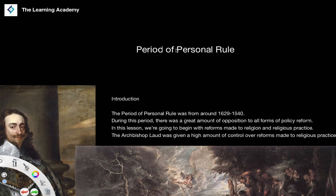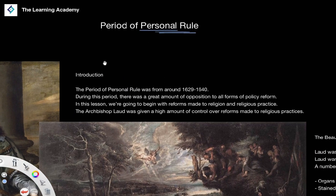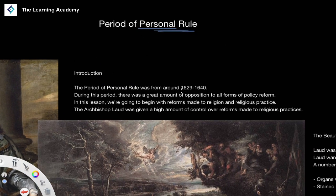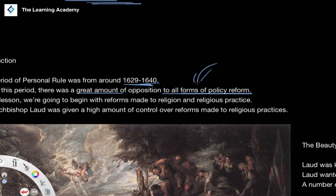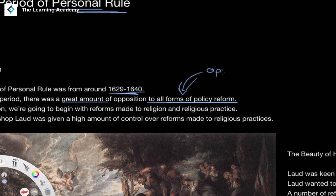The period of personal rule was a period of history from around 1629 to 1640. It was during this period that there was a great amount of opposition to all forms of policy reform — effectively opposition to everything.